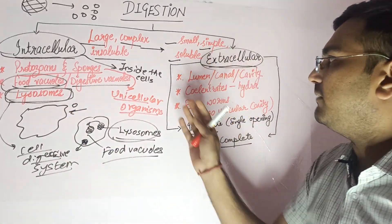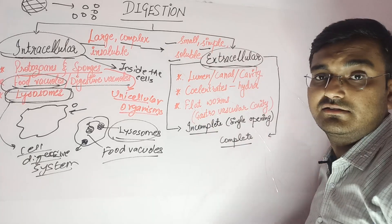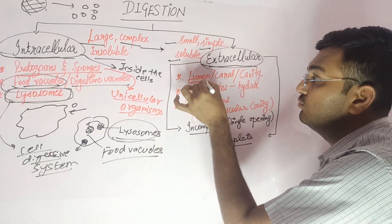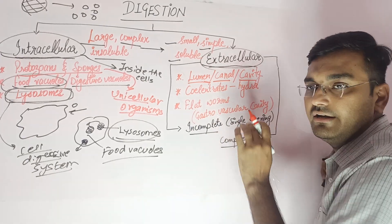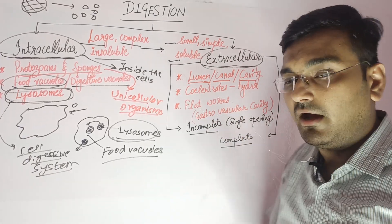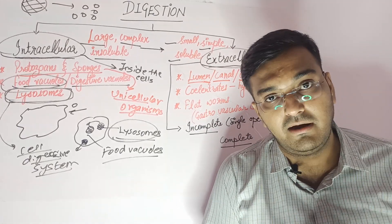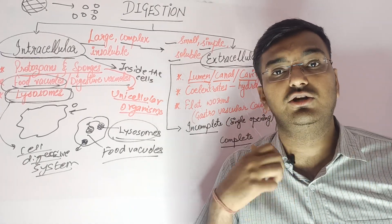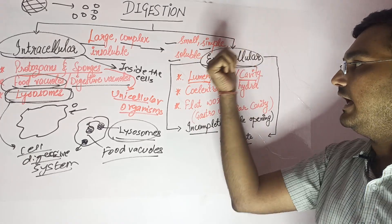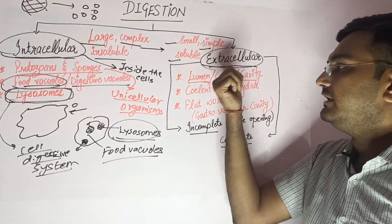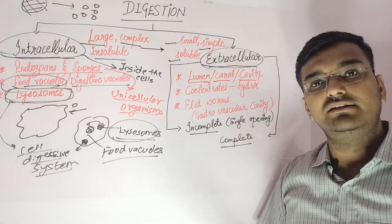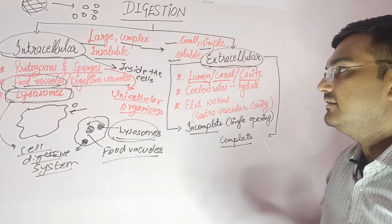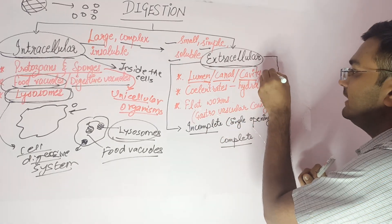In multicellular organisms, there is extracellular digestion — that is, digestion outside the cell, within a lumen, canal, or cavity. We know that there is an alimentary canal present in our body, and digestion also occurs in the alimentary canal. In extracellular digestion, there is a cavity, a canal, specialized tissues, and organs involved in digestion within the alimentary canal.